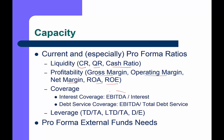Coverage ratios are really important. We use EBITDA — earnings before interest, tax, depreciation, and amortization — because depreciation and amortization are non-cash expenses. Interest coverage tells us whether operating earnings can cover interest payments. The most important ratio is typically debt service coverage: EBITDA divided by interest plus principal payments. We also look at overall leverage measures: total debt to total assets, long-term debt to total assets, and debt-to-equity. This is where proformas come in.